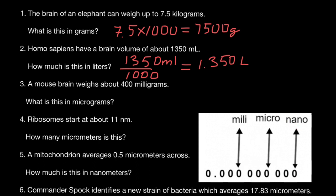If a mouse brain weighs 400 milligrams and we have to give the answer in micrograms: micrograms is 1,000 times smaller than milligrams, which means we just have to add three zeros. In micrograms, this is going to be 400,000 micrograms.